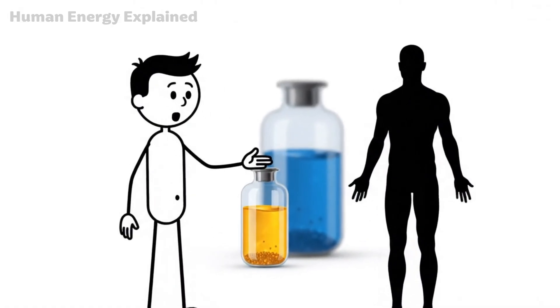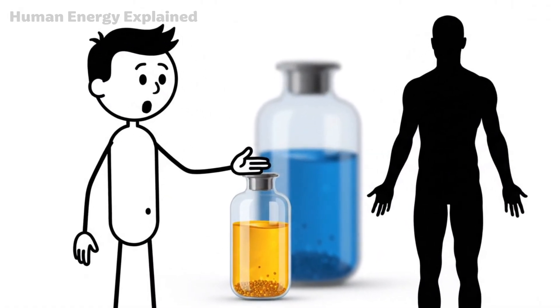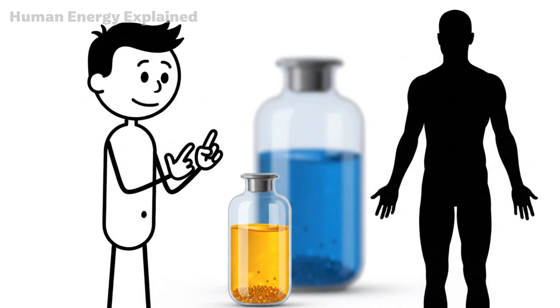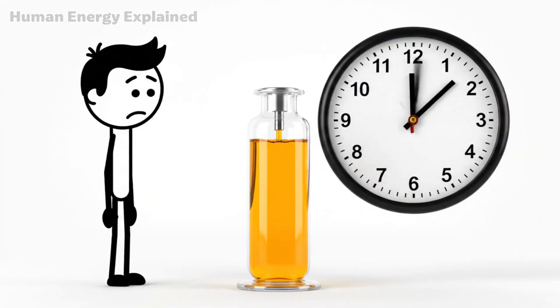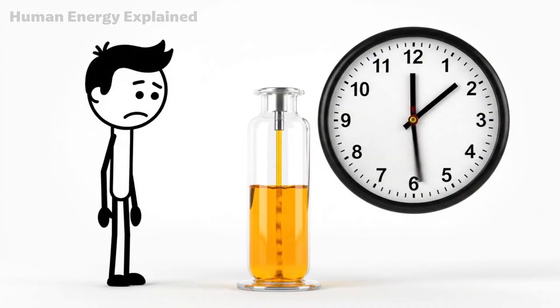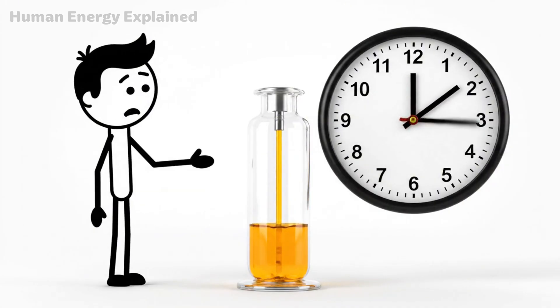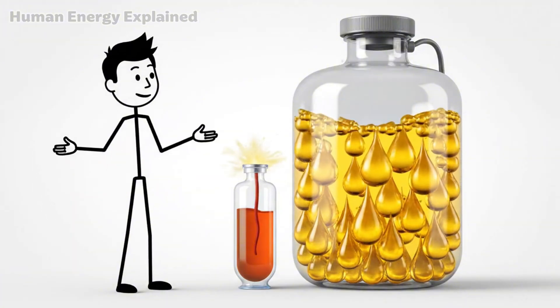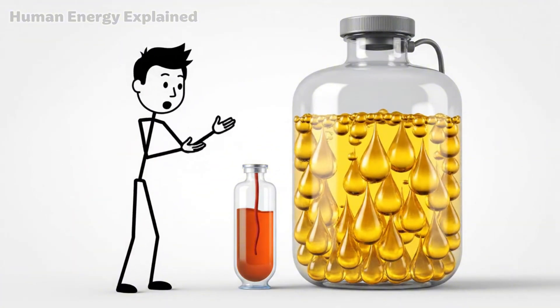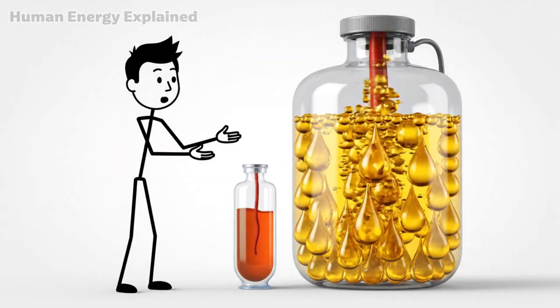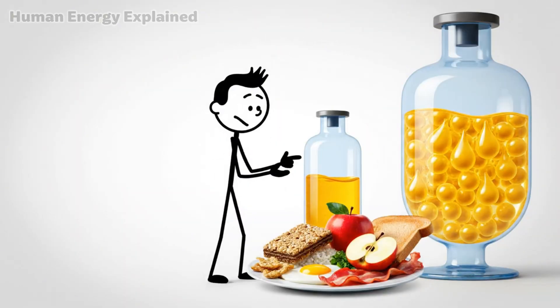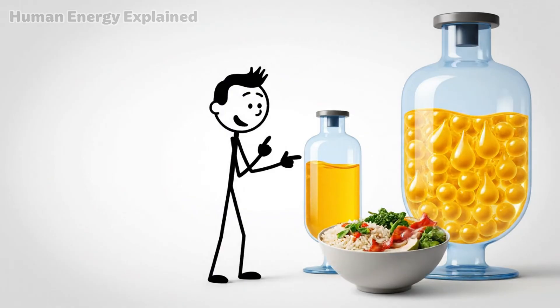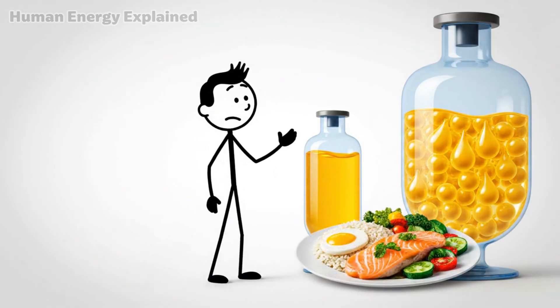Think of your body as having two fuel tanks. The first is a small tank filled with glucose, the sugar from carbohydrates. This tank empties quickly, maybe 12 to 24 hours without food. The second tank is massive, filled with stored fat, potentially carrying tens of thousands of calories. Most people never tap this tank because they keep refilling the small glucose tank every few hours with meals and snacks.